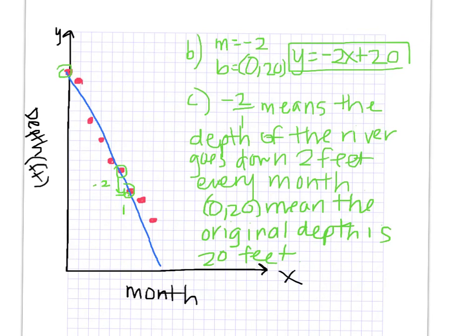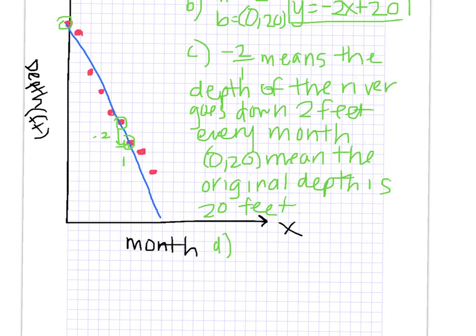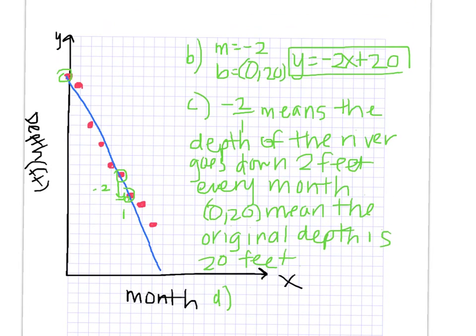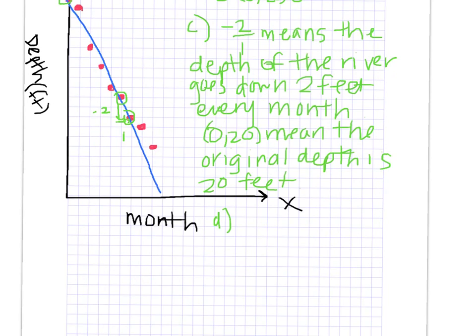Finally, the last question wants us to figure out what it would be at month 9. So luckily we've come up with a formula right here, and we can predict where this is going to be in month 9. So let's use our formula. y equals negative 20, but instead of x I'll put 9, oh not negative 20, negative 2. Negative 2 times 9 plus 20. So that's negative 18 plus 20, and so it will be at 2 feet.